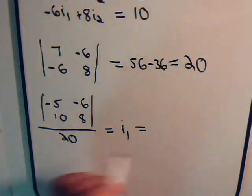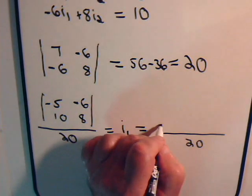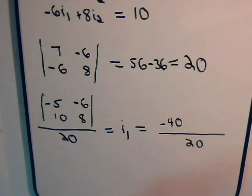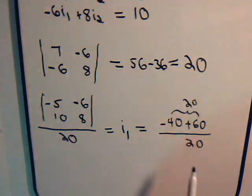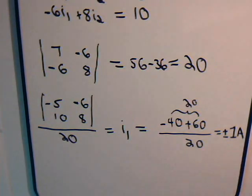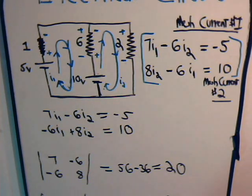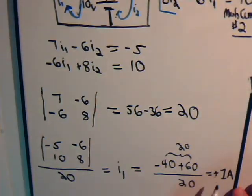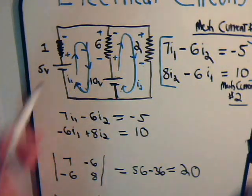And let's see, this will equal 20 in the denominator. This is minus 40, minus negative 60, that would be plus positive 60. So, that equals, that's 20. 20 divided by 20 is plus 1 amp. So, we've determined what I1 is. It's 1 amp, add a plus sign, it is plus 1 amp. So, we do have the correct direction for I1.